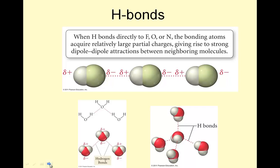Hydrogen bonds. When H bonds directly to F, O, or N. So H to F, O, or N. So these guys are very electronegative. The bonding atoms acquire relatively large partial charges, giving rise to strong dipole-dipole attractions between neighboring atoms. So hydrogen bond is just a dipole-dipole attraction, but it's a really strong dipole-dipole attraction. And what makes it really strong? It's H, which is pretty positive, and these guys, which are pretty negative, so you get a pretty intense positive-negative attraction here. So it's basically a dipole-dipole bond on steroids. Don't take steroids, kids. Don't do drugs, kids. Just vote six times.